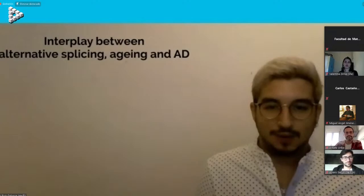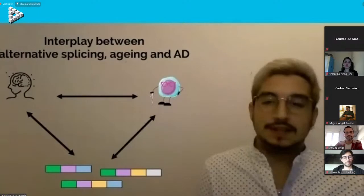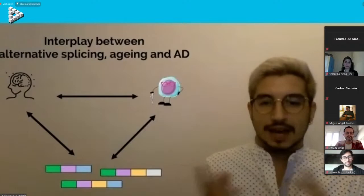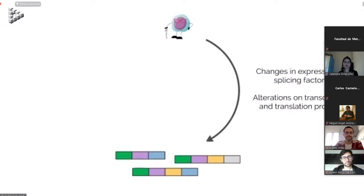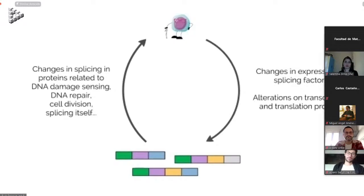How does all of this relate? We already know aging and Alzheimer's disease are related through the increased risk factor of senescence. How do we relate splicing and aging? On one hand, we have changes in expression of splicing factors induced by aging itself and alterations in the transcription process — the whole splicing machinery may be affected by the aging process. On the other hand, alterations in splicing of proteins related to DNA repair or cell division would be strictly related to aging.